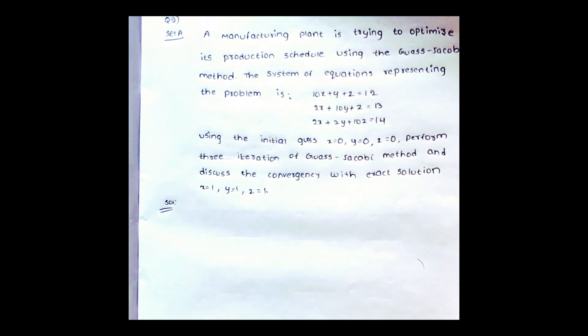The initial values we should take are x₀ = 0, y₀ = 0, and z₀ = 0. We have to perform three iterations. Let us go to the problem.